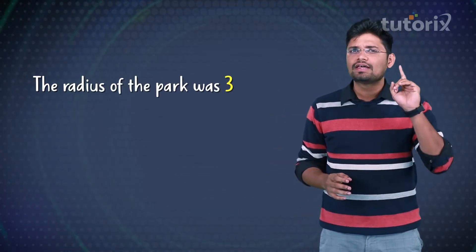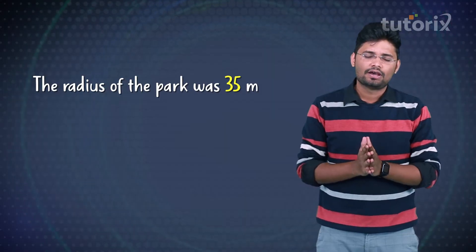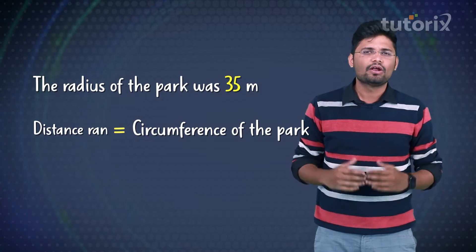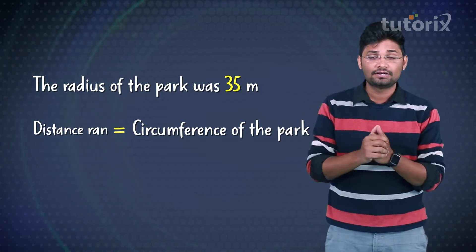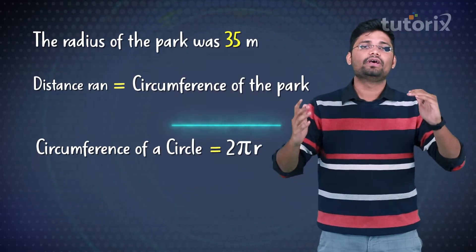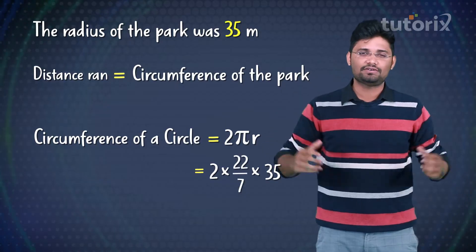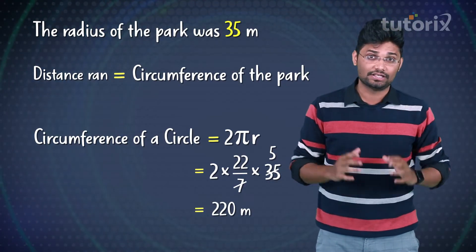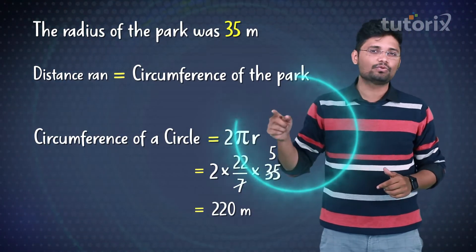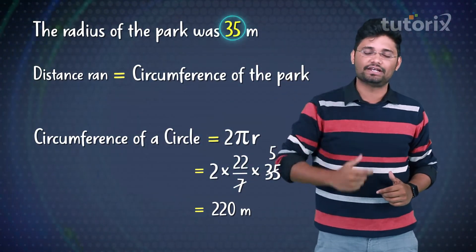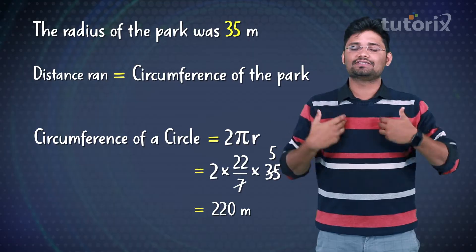Now coming back to the park, the radius of the park was 35 meters. To find the distance that I ran, it will be equal to the circumference of that park. Simply substitute the values in the formula 2πr, where r is 35 and Pi is 22 by 7. After simplification, this value comes out to be 220 meters. This means the circumference of that park was 220 meters if the radius was 35 meters.